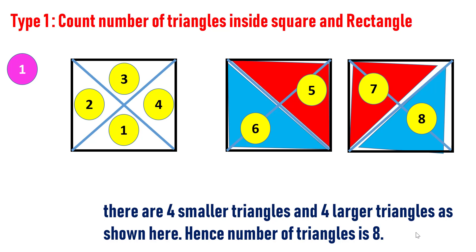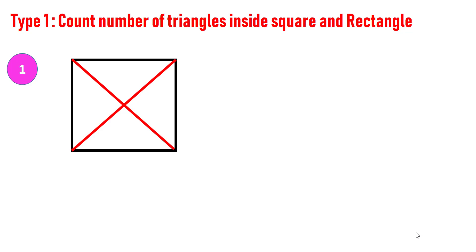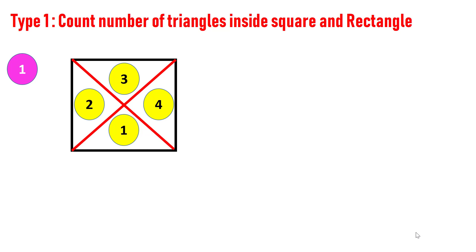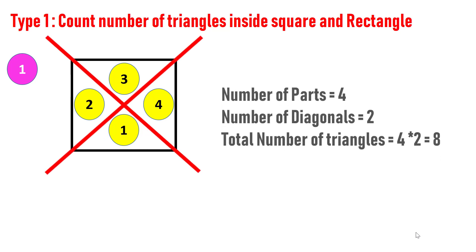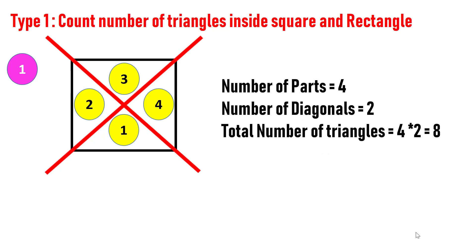You need not count the triangles manually. The trick in this figure is there are two diagonals and four blocks. Just multiply the number of diagonals with the number of blocks. Total number of triangles becomes four into two, which is eight — exactly the same number we got when counted manually.